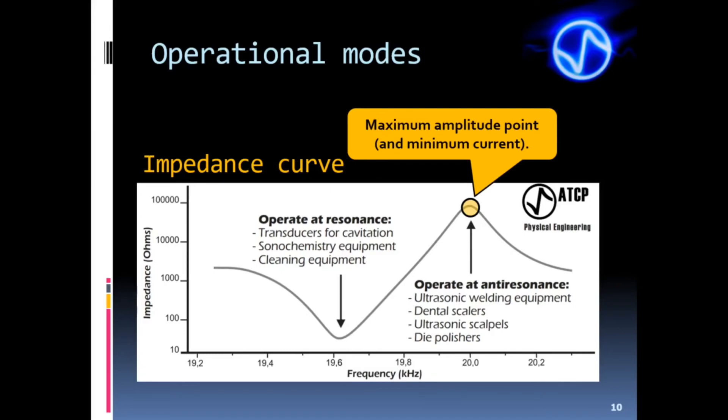On the other hand, those operating at anti-resonance have a large vibration amplitude and a low current consumption because of the high impedance. Mostly, ultrasonic welding machines operate at anti-resonance, and the generators have manual adjustment or auto-tracking to compensate slight frequency deviations. However, the tolerance range is narrow and ensuring the stack tuning in the right frequency is essential to proper generator operation.